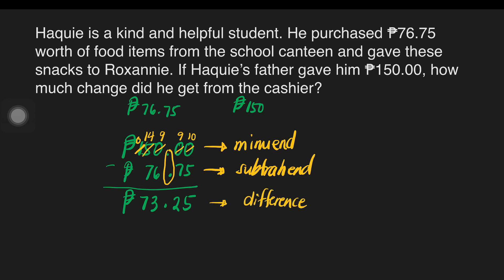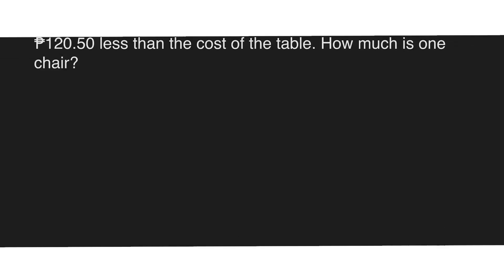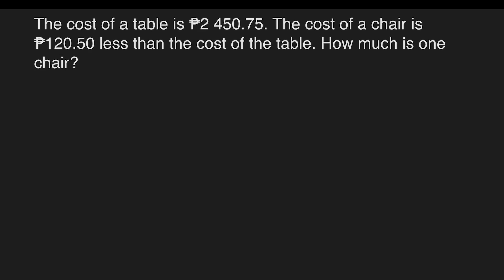So it means Haki will receive 73 pesos and 25 centavos from the cashier. Another example: the cost of a table is 2,450 pesos and 75 centavos. The cost of a chair is 120 pesos and 50 centavos less than the cost of the table. How much is one chair?